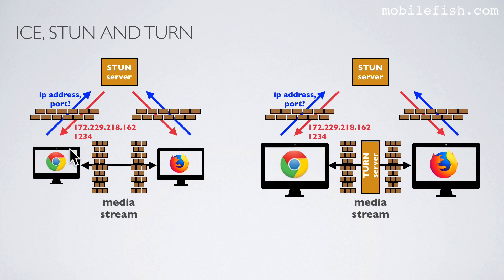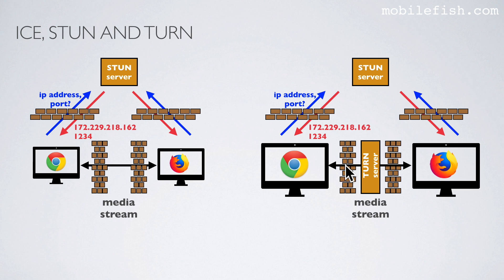In this example, this peer asks the STUN server what its IP address and port is. The STUN server returns the peer's public IP address and port. This peer will do the same. A peer-to-peer connection can be established and a media stream will flow directly between the peers. However, in some cases a direct communication cannot be established. In these cases a TURN server will be used, which relays the media stream between the peers.